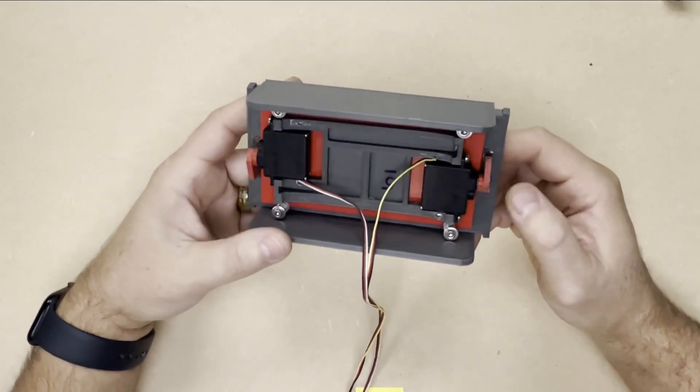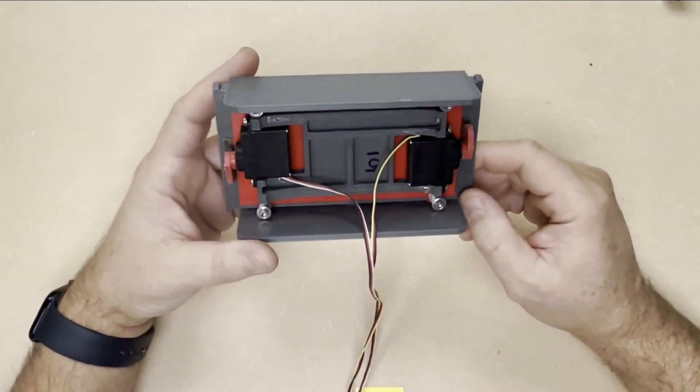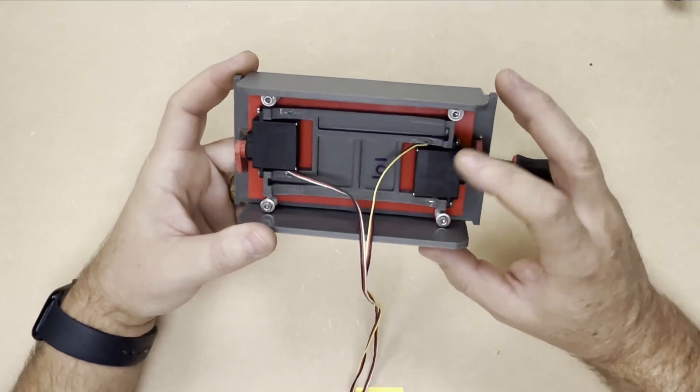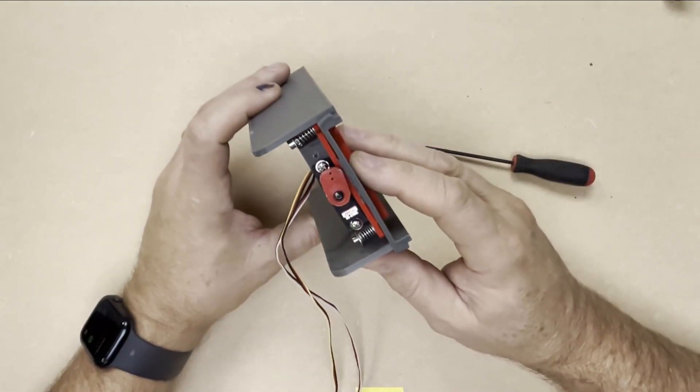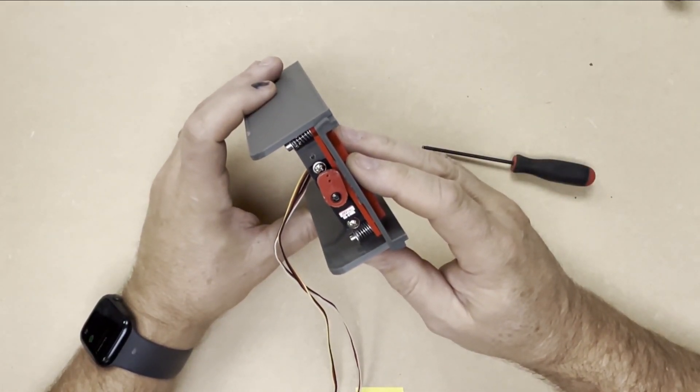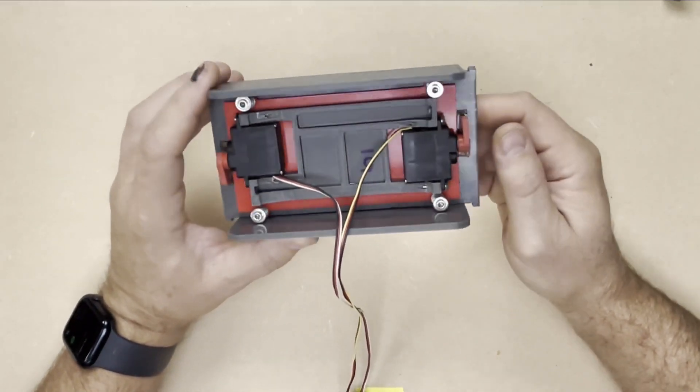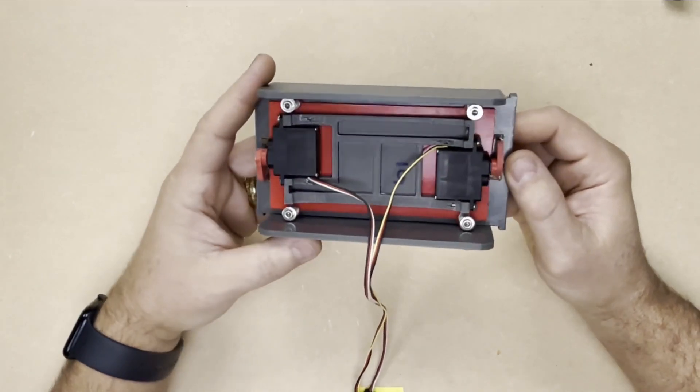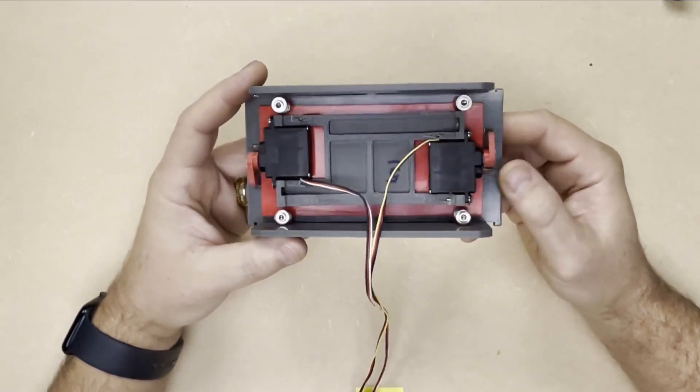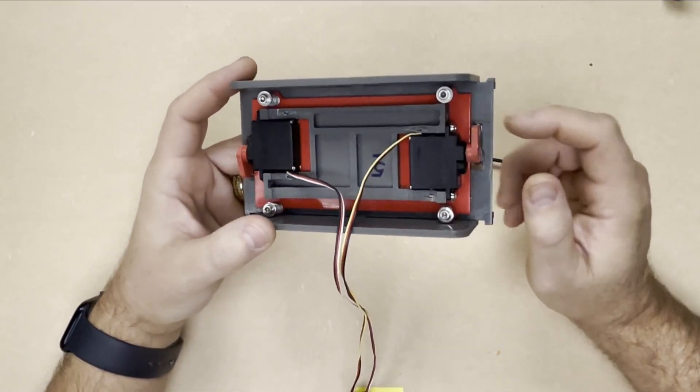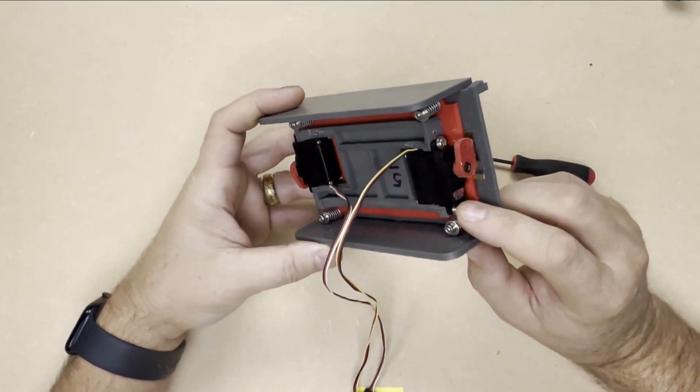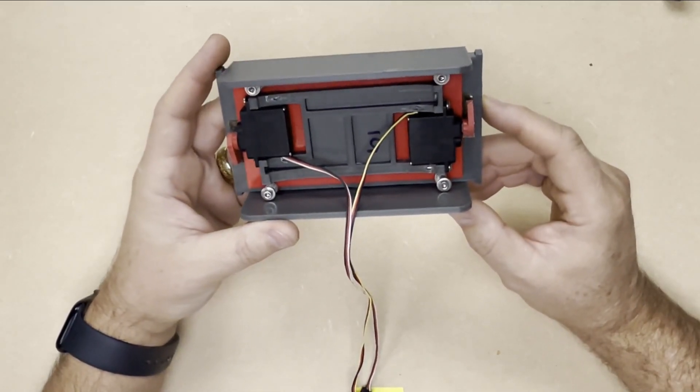So that's how that is put together. It's really simple. Now the challenging part could be getting these servos in here. So these are high-tech HS81 MGs. And the MG stands for metal gear. You want to have something that's going to be strong and last. A lot of servos come with plastic gears. I always recommend getting the metal gears instead. They'll last a lot longer.